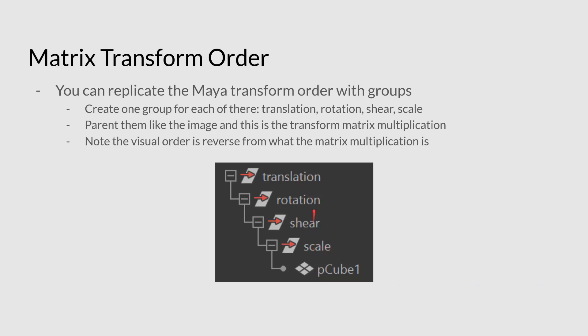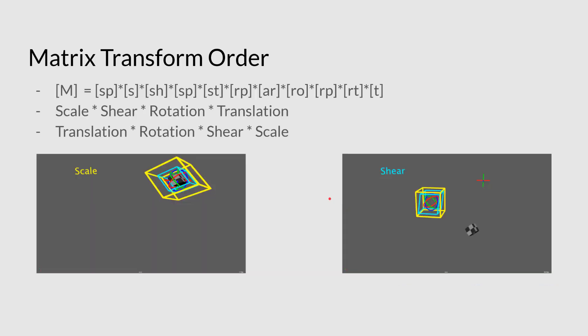So that instead of having translation first, you do scale, and then you do shear as the second one, and you'd have rotation as the third one here, and translation at the very last. If you do that, and then you should be able to replicate this exact setup here.